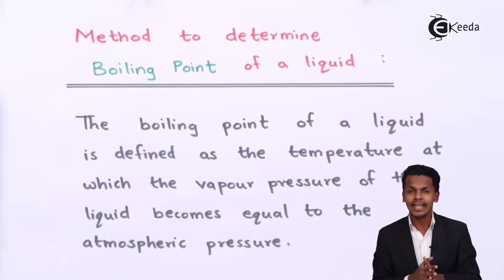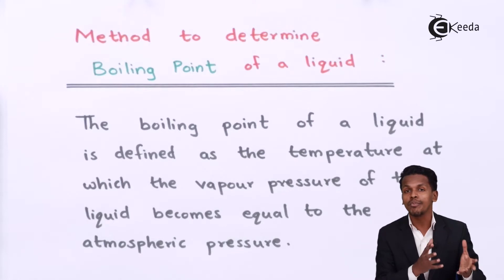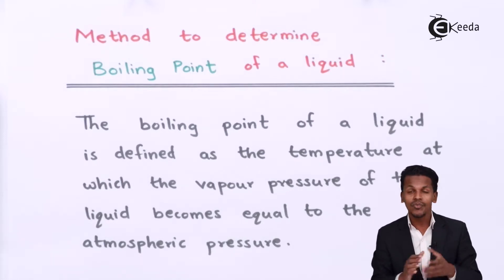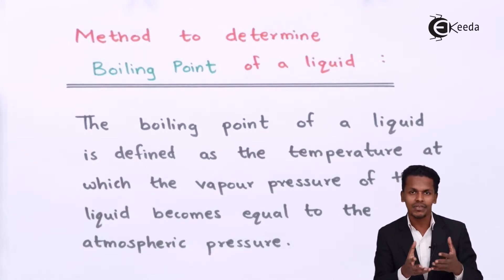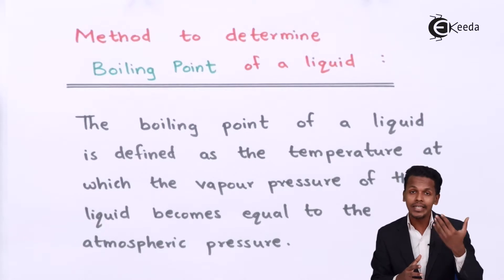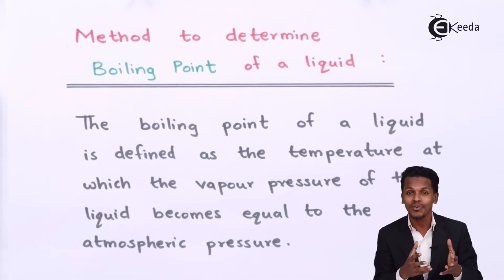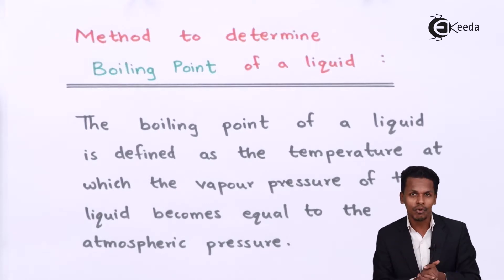A liquid, whether volatile or non-volatile, will have a certain vapor pressure at a particular normal temperature. What we have to do is determine the boiling point of that liquid. We provide such a temperature to the liquid that its vapor pressure becomes equal to 1 atmospheric pressure, and that temperature is considered to be the boiling point of that liquid.